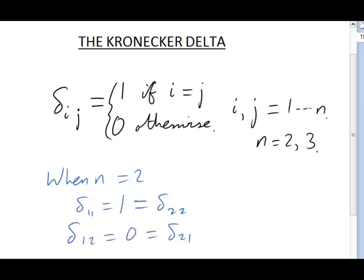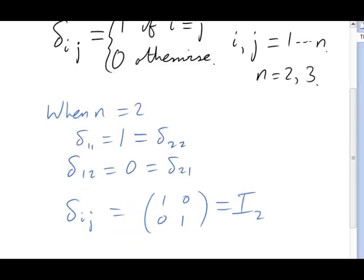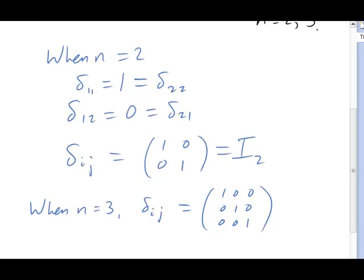We could now write out the delta in matrix form. Then we see that, actually, it's nothing other than a fancy way of writing the unit matrix, i2, when n equals 2. When n equals 3, the definition gives us the 3 by 3 unit matrix. Just as in the case n equals 2, that's because only the diagonal elements are 1's and everything else is 0.